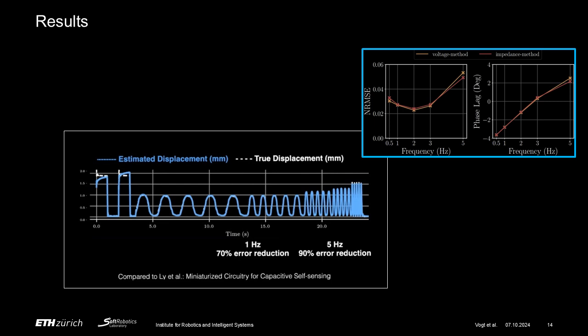Here on the top right, we visualize the normalized root mean squared error and the phase lag between the displacement estimation and the ground truth displacement for both the voltage method and the impedance method. While our method performs similarly well at very low frequencies compared to the state-of-the-art, as soon as we approach the 1 Hz mark, we can see a decrease in error of approximately 70%. This decrease is even more drastic at 5 Hz, where we find a reduction of approximately 90%, and this despite our setup using a miniature power supply.